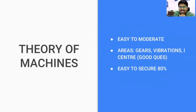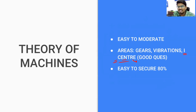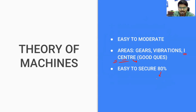Theory of Machines is easy to moderate. The velocity/acceleration center question is a good one because it is time-consuming compared to other questions — keep such questions for the end, not the start. Vibration and gears questions are moderate only. Here also, you will be able to easily secure 8 out of 10.